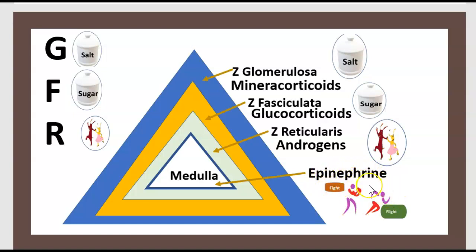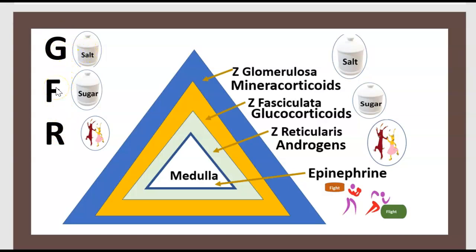A useful mnemonic: G for Glomerulosa — salt; F for Fasciculata — sugar; R for Reticularis — sex (androgen).